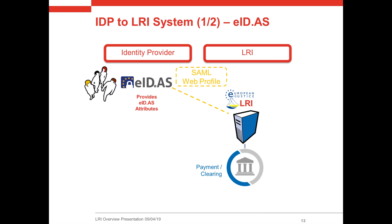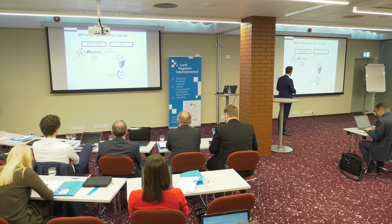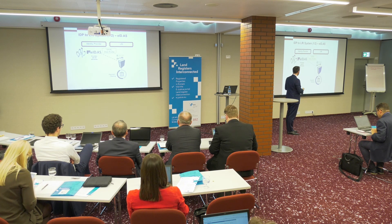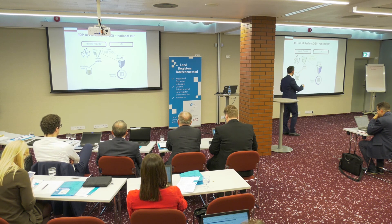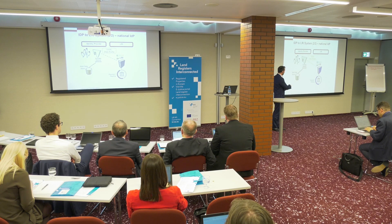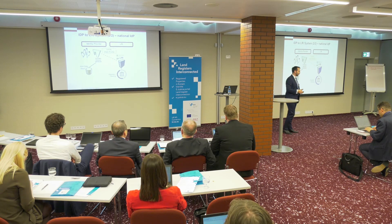How does it actually work? At the LRI system, you say you want to log in and use your citizen card. You get into the EIDAS selection screen, it redirects you to your local endpoint, you log in with your electronic ID, and via the SAML web profile the information comes back to the LRI system. It's essentially the same if you log in within your own organization — you jump to your identity provider, which uses its data store to say you have this right, and provides that information back over the same SAML web profile to the LRI system.